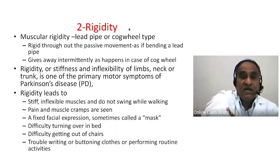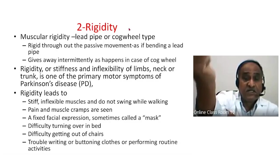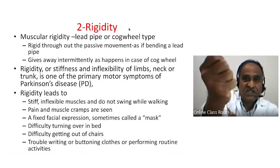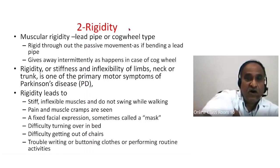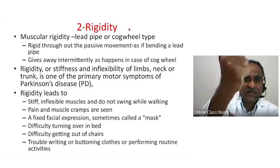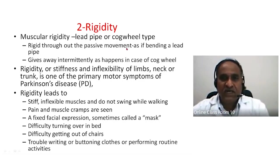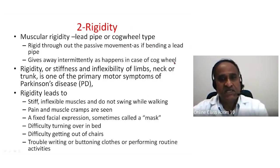Sometimes the limb may give way, but not like the clasp-knife rigidity seen in spasticity. Instead, it gives way in a stepwise manner — cogwheel rigidity. Lead pipe rigidity has continuous resistance throughout passive movement; cogwheel rigidity gives way intermittently as if in a cogwheel — the resistance is intermittent, like breaks.